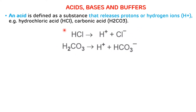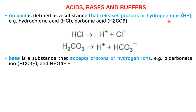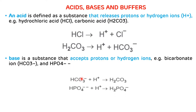So that's why they are called acids — because they release protons or hydrogen ions. A base is a substance that accepts protons or hydrogen ions, and the examples are bicarbonate ion and phosphate ion. The bicarbonate ion, after accepting a proton, gets converted to carbonic acid, and HPO4²⁻ after accepting H+ gets converted to H2PO4⁻.